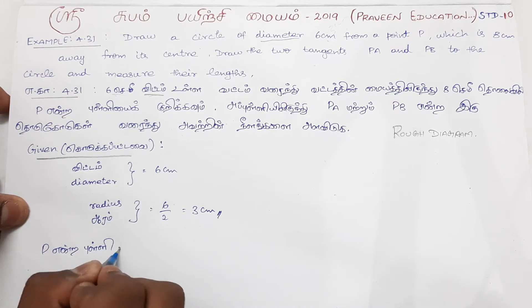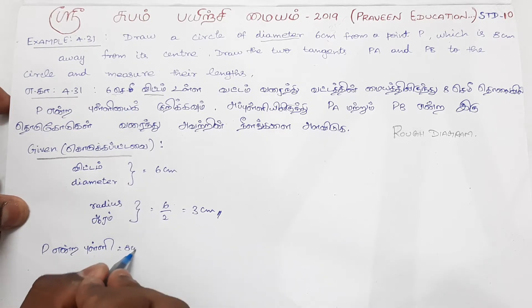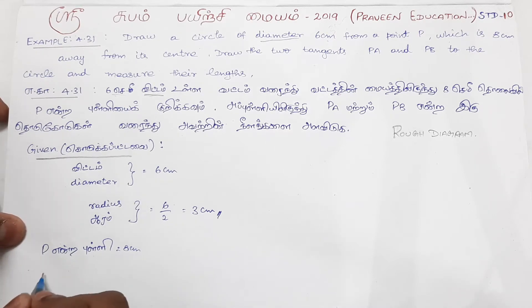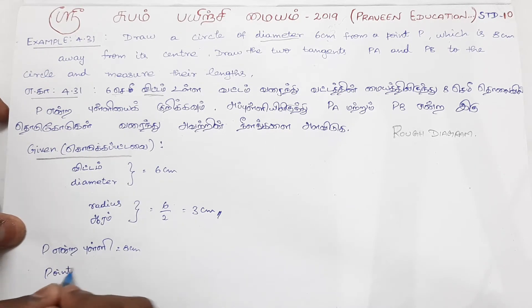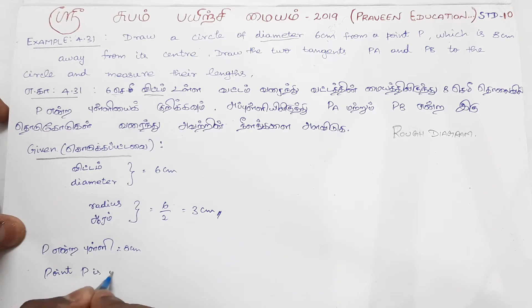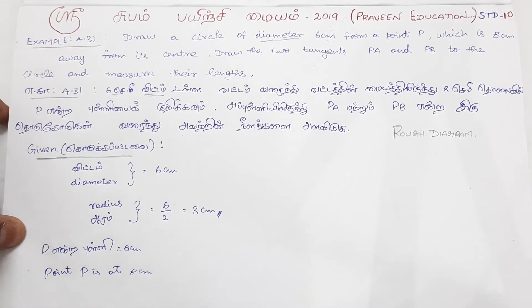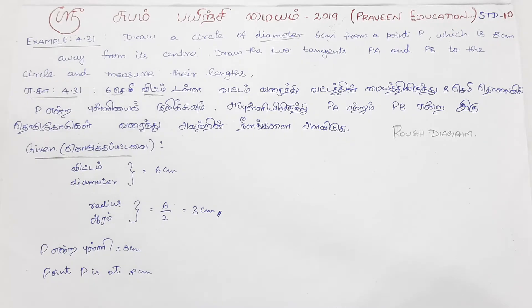Point P is at 8cm from the circle. Now we are going to use the rough diagram.